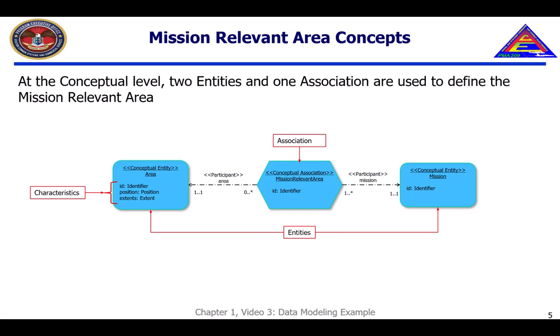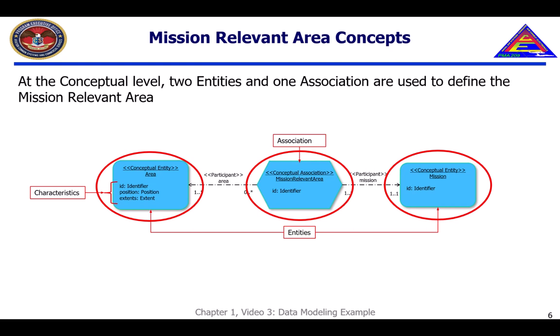The conceptual data model captures the semantic meaning of data elements using entities and associations that are each defined using characteristics. A relevant operating picture is defined as a geographic area relevant to a mission. Because of this connection between two basic concepts — area and mission — mission-relevant area is defined to be the association between the entities geographic area and mission.